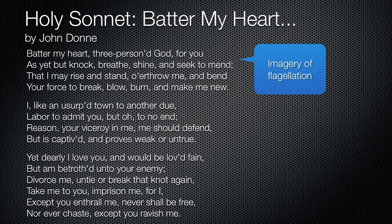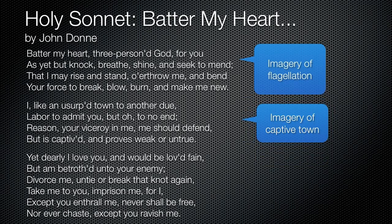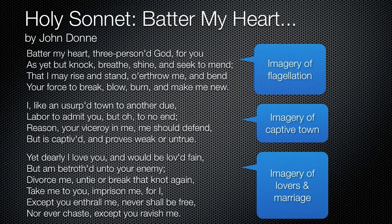There are three parts of this poem. The first stanza deals with imagery of flagellation — what monks would do, beating themselves to teach sacrifice. Then you have the imagery of a captive town: "I'm like this conquered town, and I want you to come and free me." Then you have imagery of lovers and marriage — being betrothed to an enemy and wanting to be divorced. So how do you tie these three ideas together? You make it flow through voice, words, overall meaning, and the techniques of sound and rhyme.